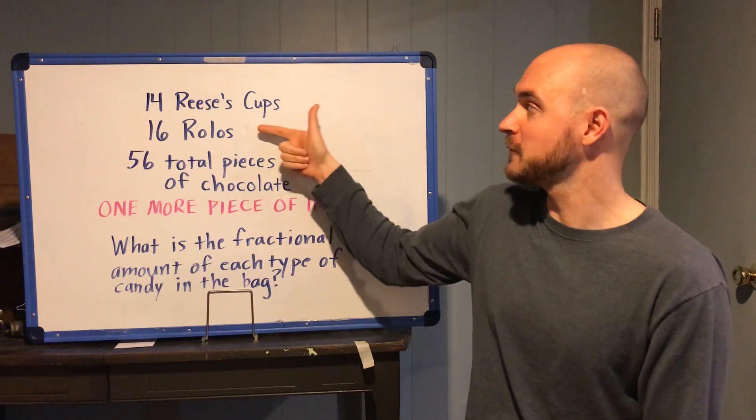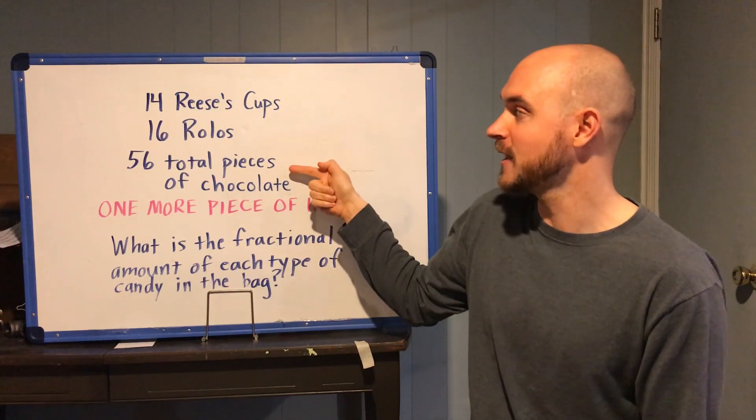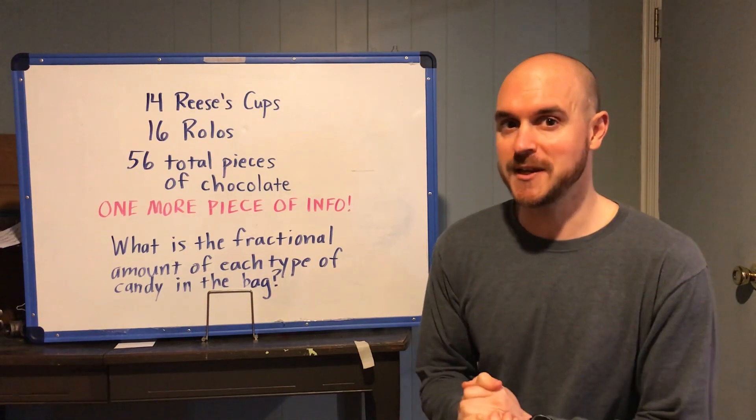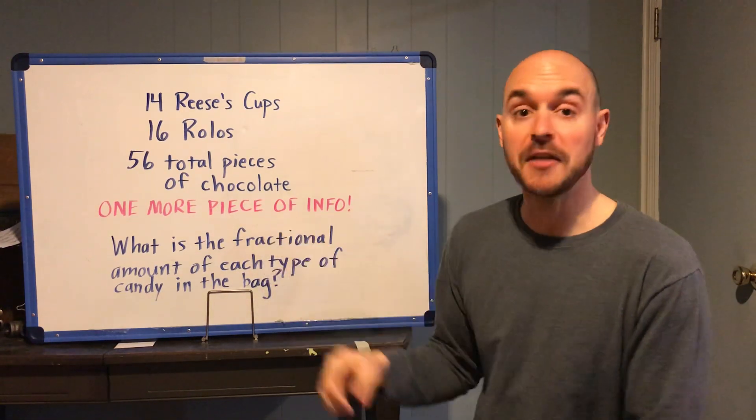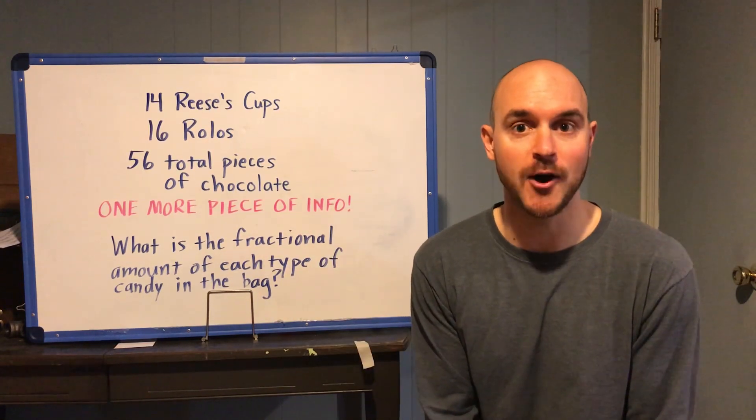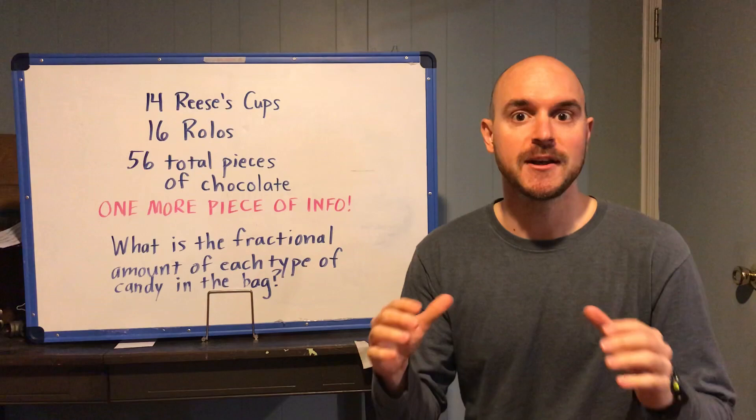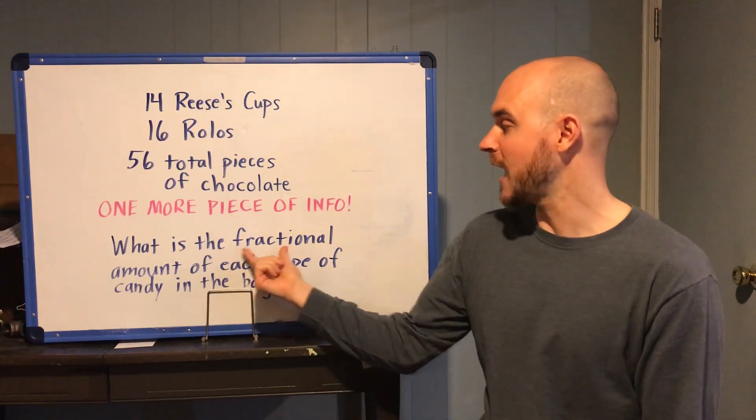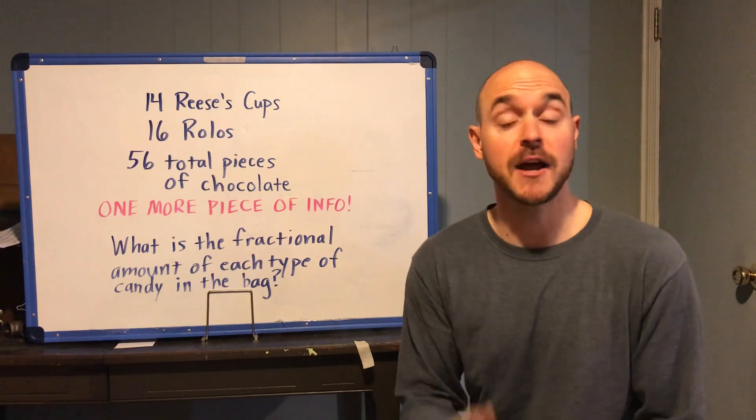So if you know this piece of information this piece of information and that there are 56 total pieces there's one other piece of information that you can figure out based on this information that we now know and by the time you've sifted through and you've done some calculating you should now be able to come up with three fractions again.